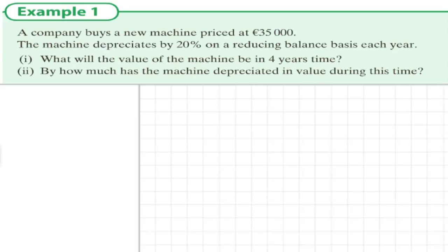Example 1: A company buys a machine priced at €35,000. The machine depreciates at 20% on a reducing balance basis each year. What will the value of the machine be in 4 years time?